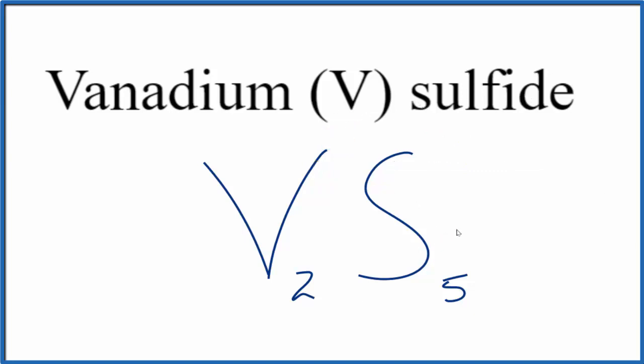If you were given the formula V2S5 and asked to find the name, you know sulfur is 2-, so you'd have a 10- here. The vanadium would have to be 5+, so you'd write this Roman numeral within the name. This is Dr. B, thanks for watching.